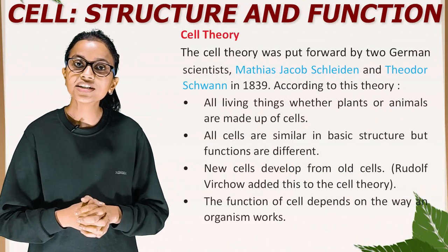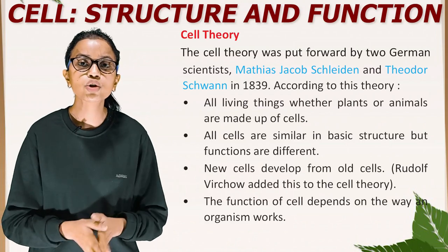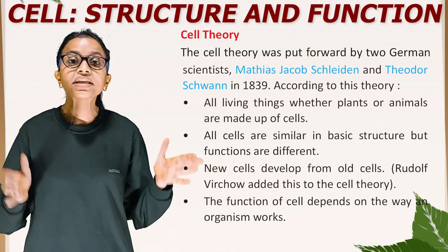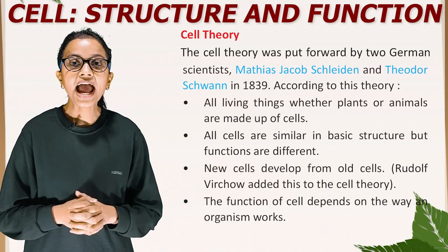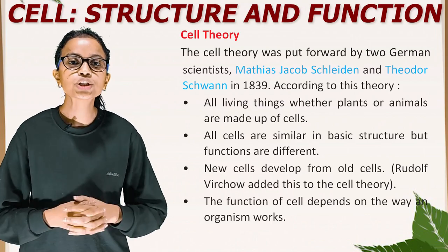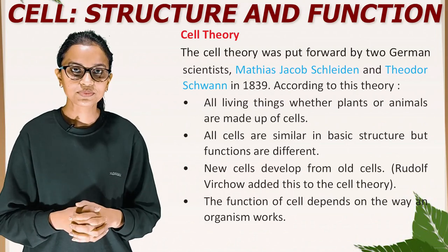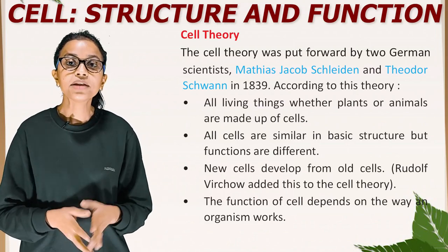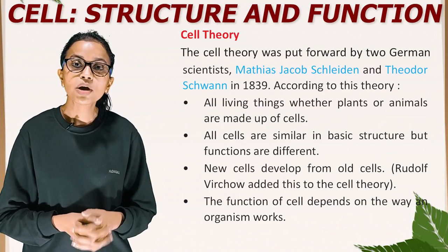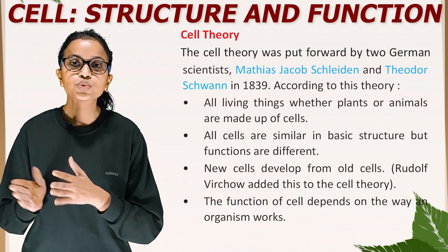Now we are moving towards the cell theory. The cell theory was put forward by two German scientists, Matthias Jacob Schleiden and Theodor Schwann, in 1839. According to this theory, all living things, whether plants or animals, are made up of cells. All cells are similar in basic structure, but their functions are different. New cells develop from old cells — Rudolf Virchow added this to the cell theory. The function of a cell depends on the way an organism works.